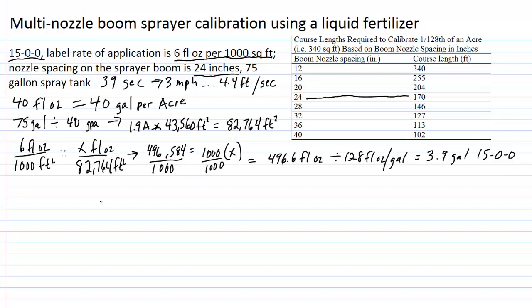Now, what if we only had 20,000 square feet to treat? There would be no point in making up a full sprayer tank. So let's again look at some possibilities for proportions, which we can use to determine, well, how much water will we need in the tank and how much of the 15-0-0 fertilizer will we need in the tank in order to deliver 6 fluid ounces of product per 1,000 square feet.